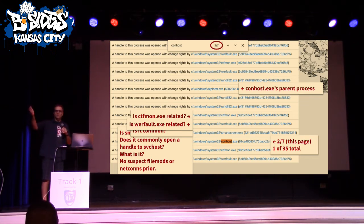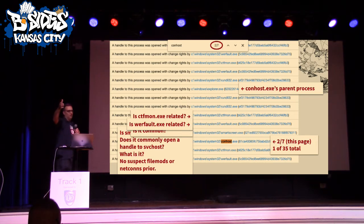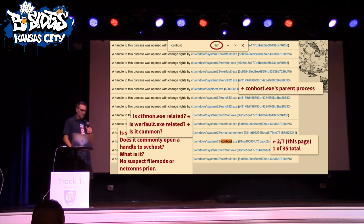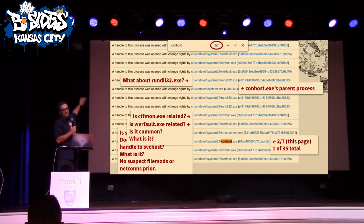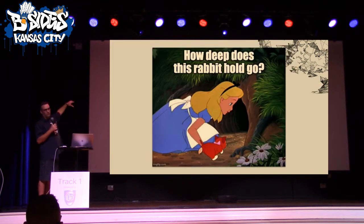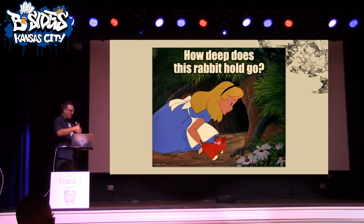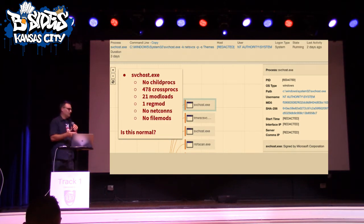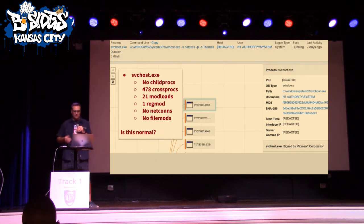There's also WerFault — Windows error reporting. This runs anytime something crashes in Windows. It collects data and will send it off to the Microsoft mothership if configured to do so — and I think you have to turn it off, so it comes that way out of the box. Just like CTFMon, it's about every five seconds opening a handle into SvcHost on this machine. And there's also RunDLL32 in the timeline, which can be used for all kinds of interesting things like a memory dump of LSAS. We could go down the rabbit hole looking at all 478 cross-process events, but we'd be here all day.